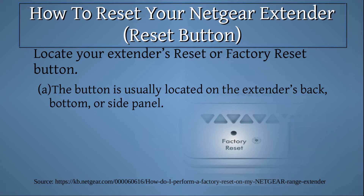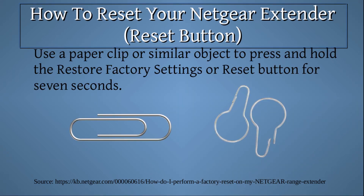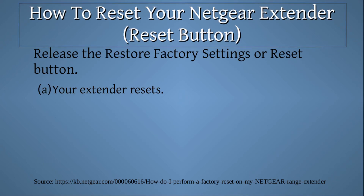Then locate your extender's reset or factory reset button. The button is usually located on the extender's back, bottom, or side panel. Use a paper clip or similar object to press and hold the restore factory settings or reset button for 7 seconds, then release. Your extender resets.